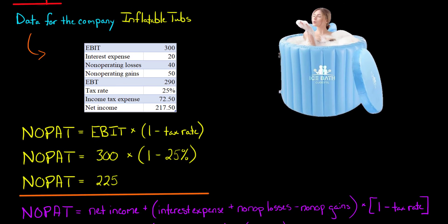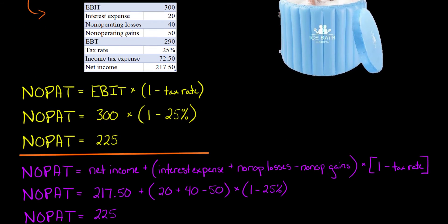I'm going to do the more complicated formula and show you that it still arrives at the same NOPAT. We're going to start with the company's net income this time, which is $217.50, and then we're going to make those adjustments. Remember, with the adjustments, we take the company's interest expense, which was $20, then we take the non-operating losses, which are 40, and then we subtract the non-operating gains of 50. We take that, so 20 plus 40 minus 50, we get to 10, multiply it by one minus the tax rate. So this whole thing here is $7.50, and then we add that adjustment to the company's net income. That results in a NOPAT of $225, which was exactly the same as we calculated under the easier approach.